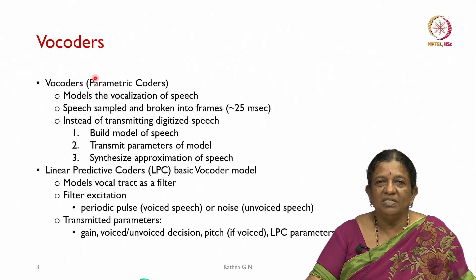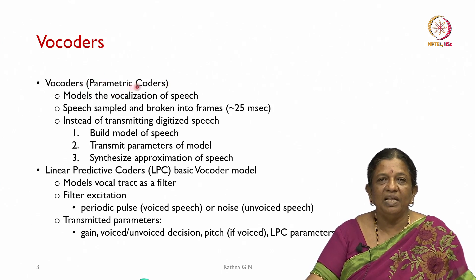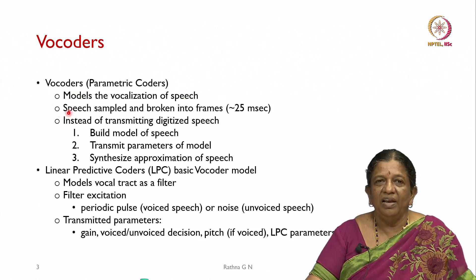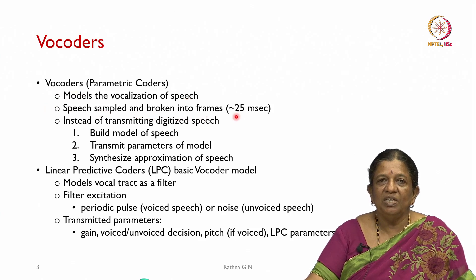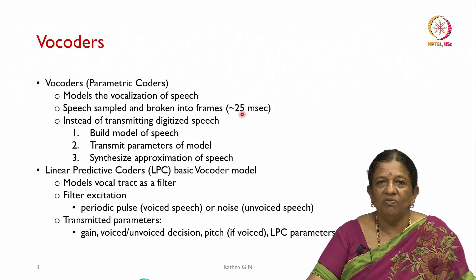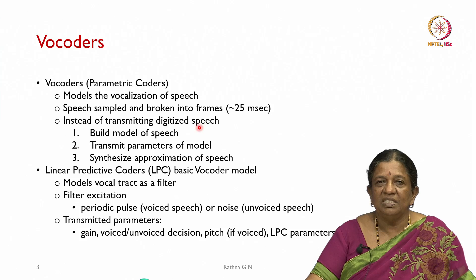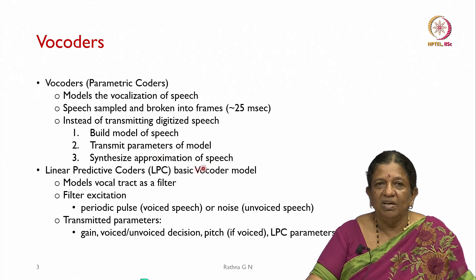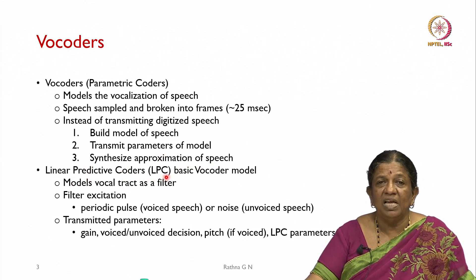Vocoders are parametric coders that model the vocalization of speech. The speech is sampled and broken into frames of approximately 25 milliseconds. Instead of transmitting digitized speech, we build a model of speech, transmit the parameters of the model, and synthesize an approximation of speech. The first one in this category is the linear predictive coder, LPC.